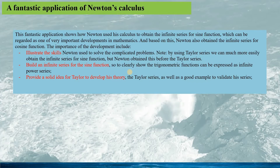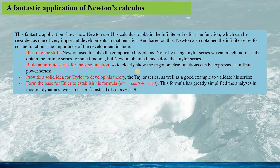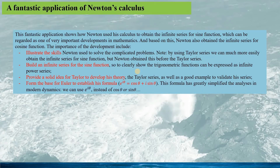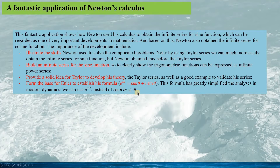The Taylor series — since complicated functions can be expanded into power series — and this development also provided a good example for validating the Taylor series. It also formed the base for Euler to establish his formula: e to the power of iθ equals cos θ plus i sin θ. This formula has greatly simplified the analysis in modern dynamics, since we can simply use e^(iθ) instead of the functions cos θ or sin θ.